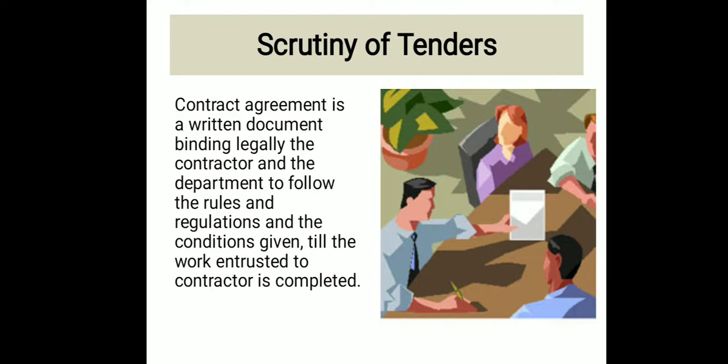Scrutiny of Tenders: After preparing the comparative statement, the tender opening authority shall verify whether the contractor has agreed to all the tender conditions, or has included any special conditions, and the consequent variation in the total amount has to be calculated. If the acceptance of a particular tender does not rest with the divisional officer, he has to forward the tender along with the comparative statement and tender documents with his recommendation or observation to the next higher authority.